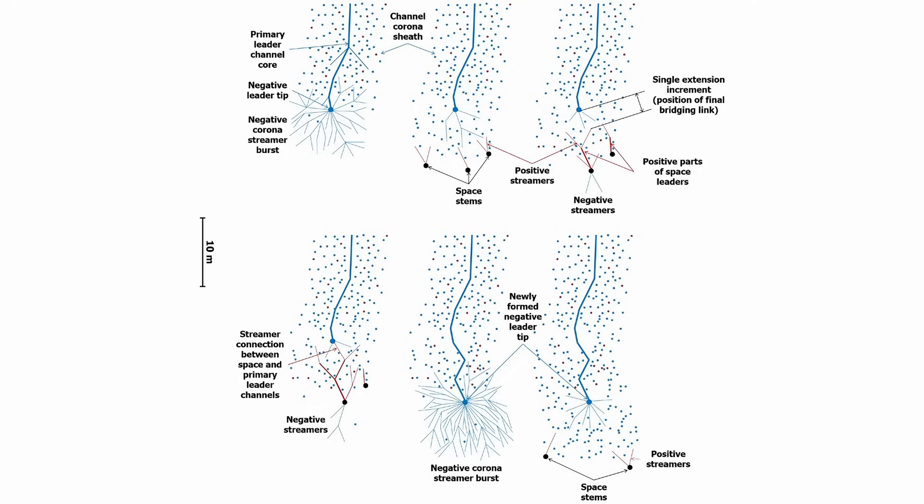observations of both long spark and lightning discharges in the laboratory suggest that unlike positive leaders, a streamer zone of negative leaders simultaneously contains streamers of both polarities.